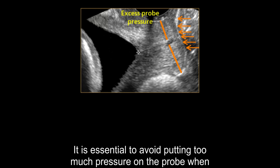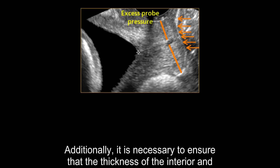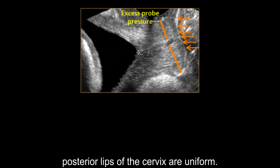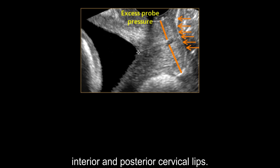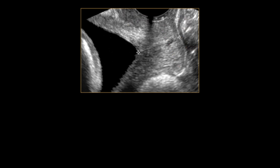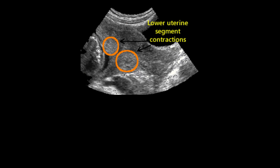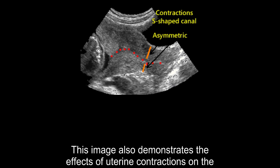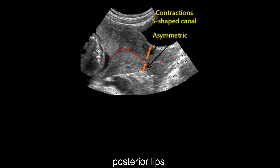It is essential to avoid putting too much pressure on the probe when examining the cervix. It is also necessary to ensure that the thickness of the anterior and posterior lips of the cervix is uniform. This image shows a noticeable difference in the thickness of the anterior and posterior cervical lips. The circular areas outlined indicate contractions in the lower uterine segment. This image also demonstrates the effects of uterine contractions on the cervix, which has an S-shaped canal and asymmetry between its anterior and posterior lips.